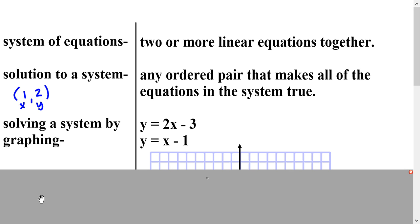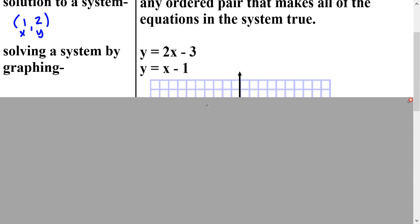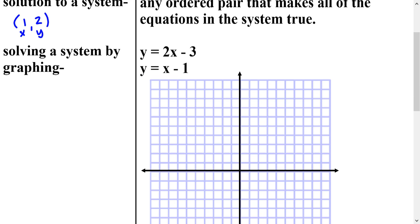So to solve a system of equations by graphing, let's say we have y = 2x - 3 and y = x - 1. If I was to graph both of these equations, I should be able to find the point where they cross, and that would be where a solution is for both equations at the same time. Because all the points on each line are going to represent solutions for that line, but then the point where they both have in common is going to be the solution for both of them together.